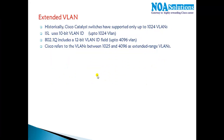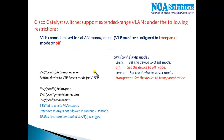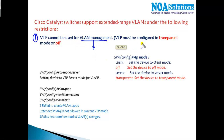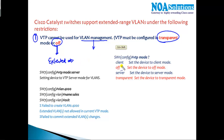Most Catalyst switches support the extended VLAN range under certain restrictions. The first condition is regarding VTP — VTP cannot be used for extended VLAN management. VTP must be configured either in transparent mode or off mode. Extended VLANs will not work if you are using any VTP mode other than transparent or off.